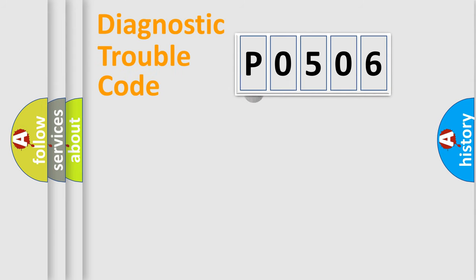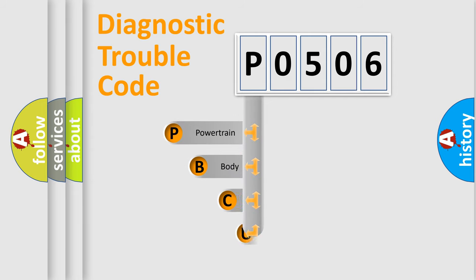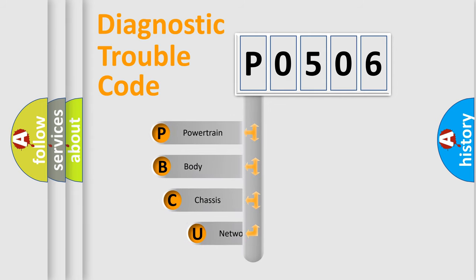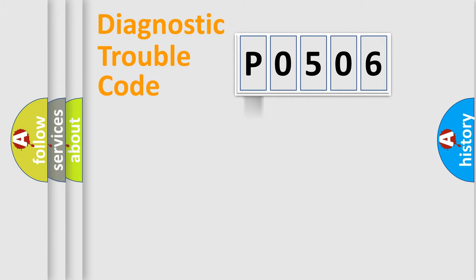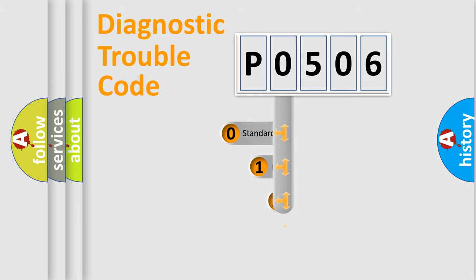Let's look at the history of diagnostic fault code composition according to the OBD2 protocol, which is unified for all automakers since 2000. We divide the electric system of the automobile into four basic units: powertrain, body, chassis, and network. This distribution is defined in the first character of the code.